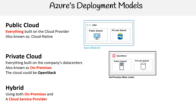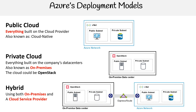The last model on our list is hybrid. With hybrid, you are using both on-premises and the cloud service provider, and they're connected together. There are a lot of different networking services that facilitate the connection between the two. In this case, we're using ExpressRoute — a dedicated connection, like having a fiber optic line running from your on-premises data center to the Azure network.